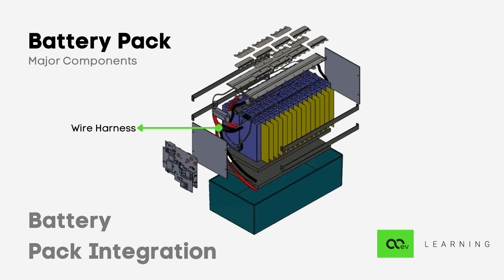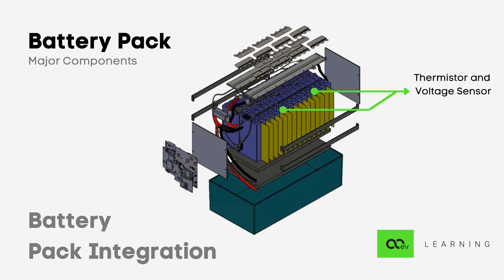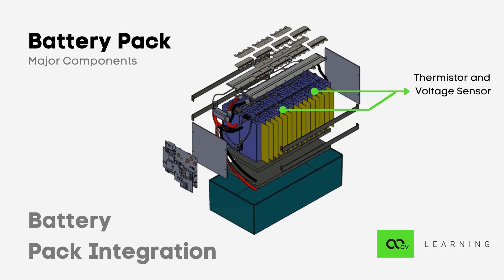As the BMS requires a voltage sensor and current sensor, we have both of those. Then comes the brain of the battery pack — the battery management system — followed by the overall casing of the battery pack.